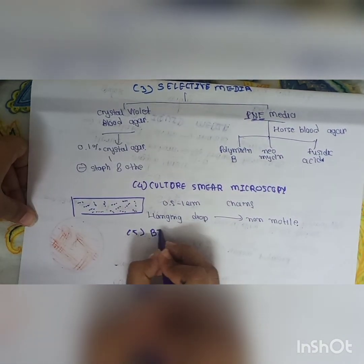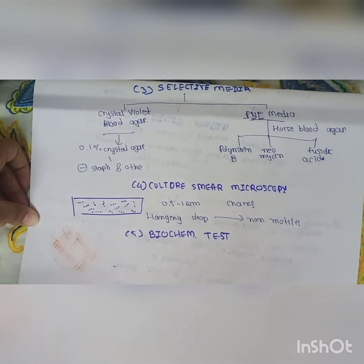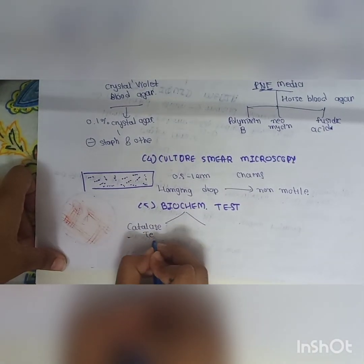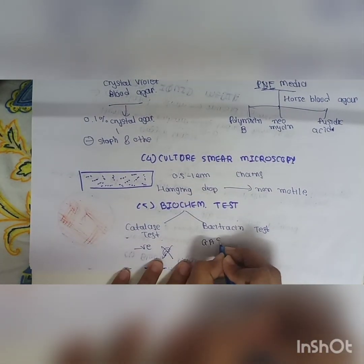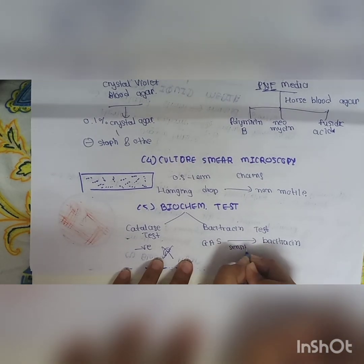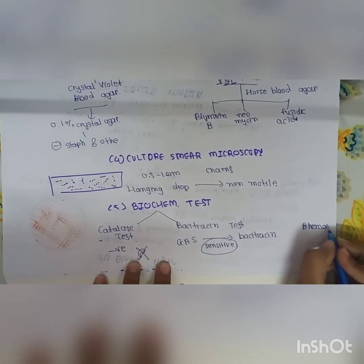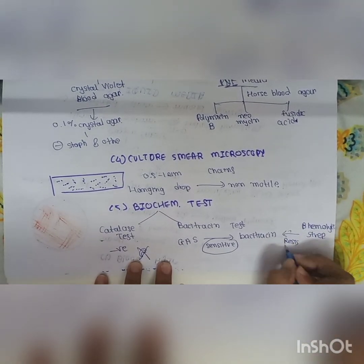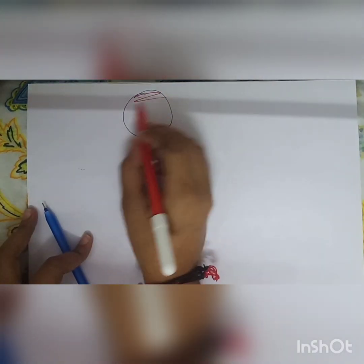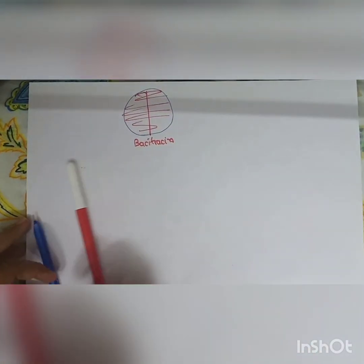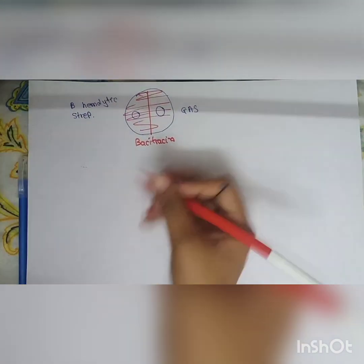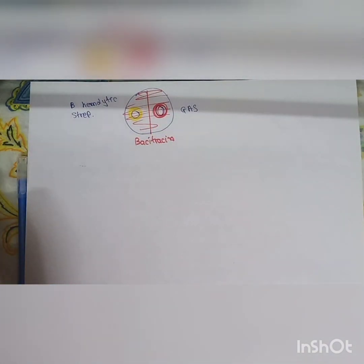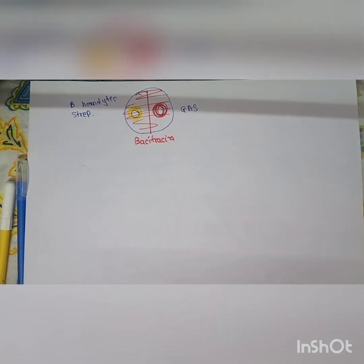The fourth method is biochemical tests for identification. S. pyogenes includes two key tests: catalase test and bacitracin test. The catalase test is negative — they don't produce catalase enzyme. GAS is sensitive to bacitracin, whereas other beta-hemolytic streptococci are resistant. In bacitracin-containing media, GAS will die off, while other beta-hemolytic streptococci will show beta hemolysis.